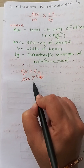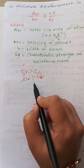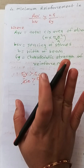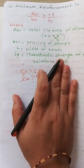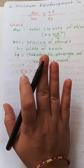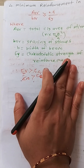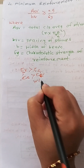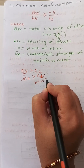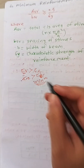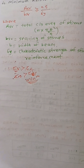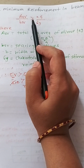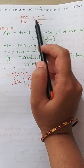The second case is when τc is greater than τv — that is, the permissible shear stress is greater than the actual shear stress. In this case, shear reinforcement is not needed. However, minimum reinforcement must still be provided, calculated using the formula listed: Asv / (b·sv) ≥ 0.4 / σy.